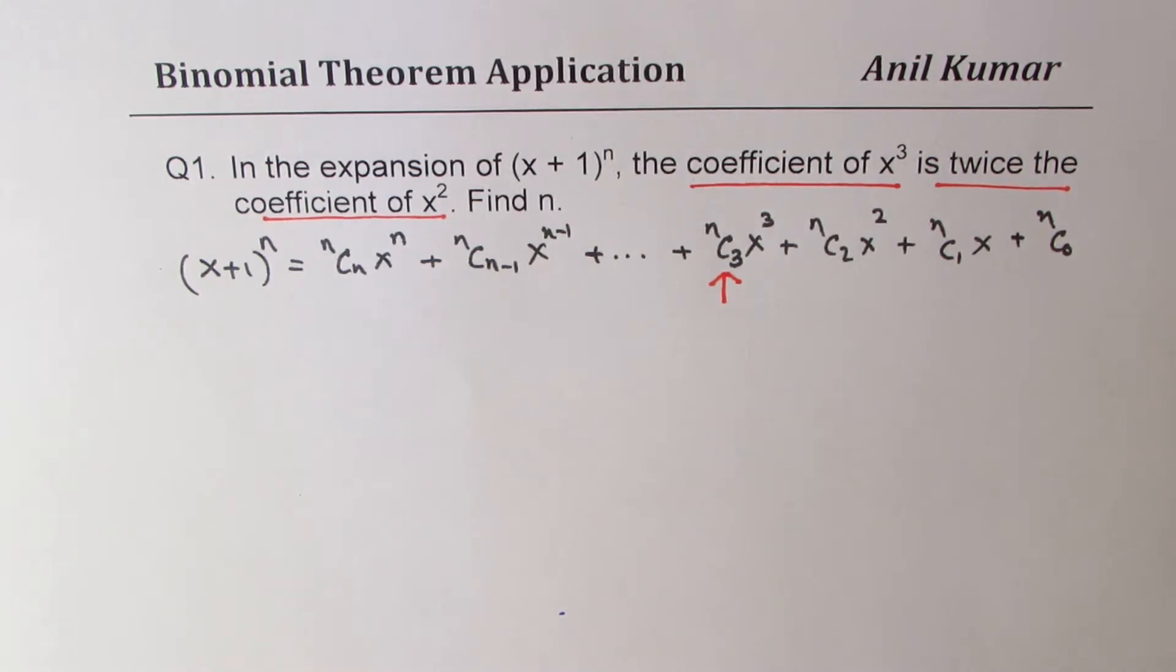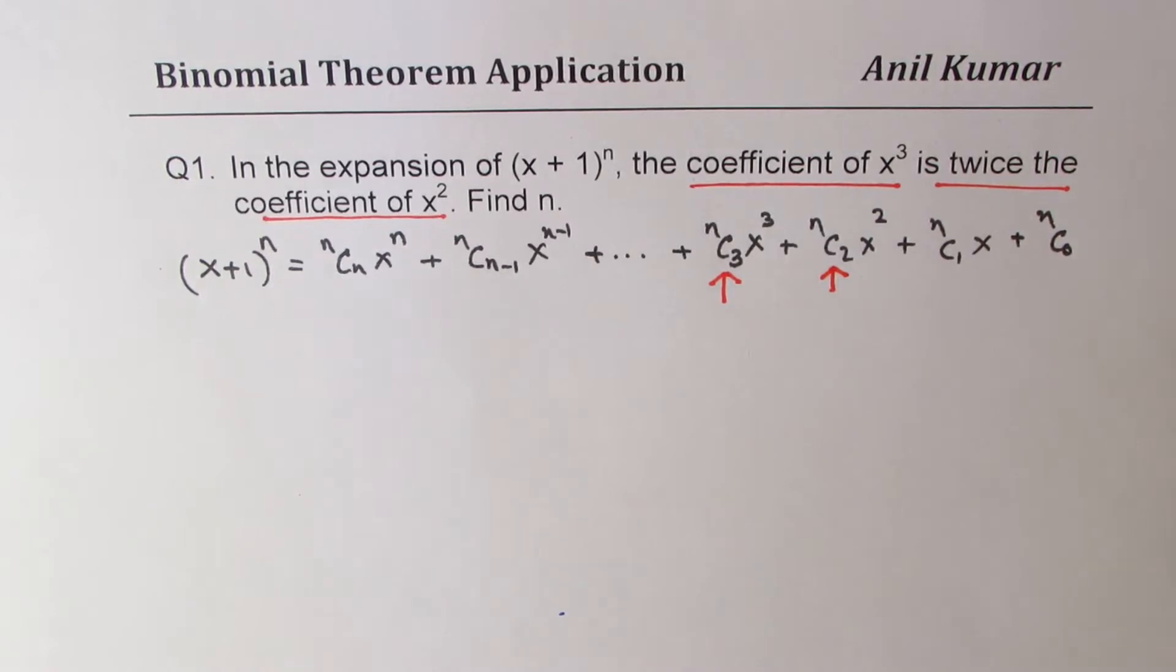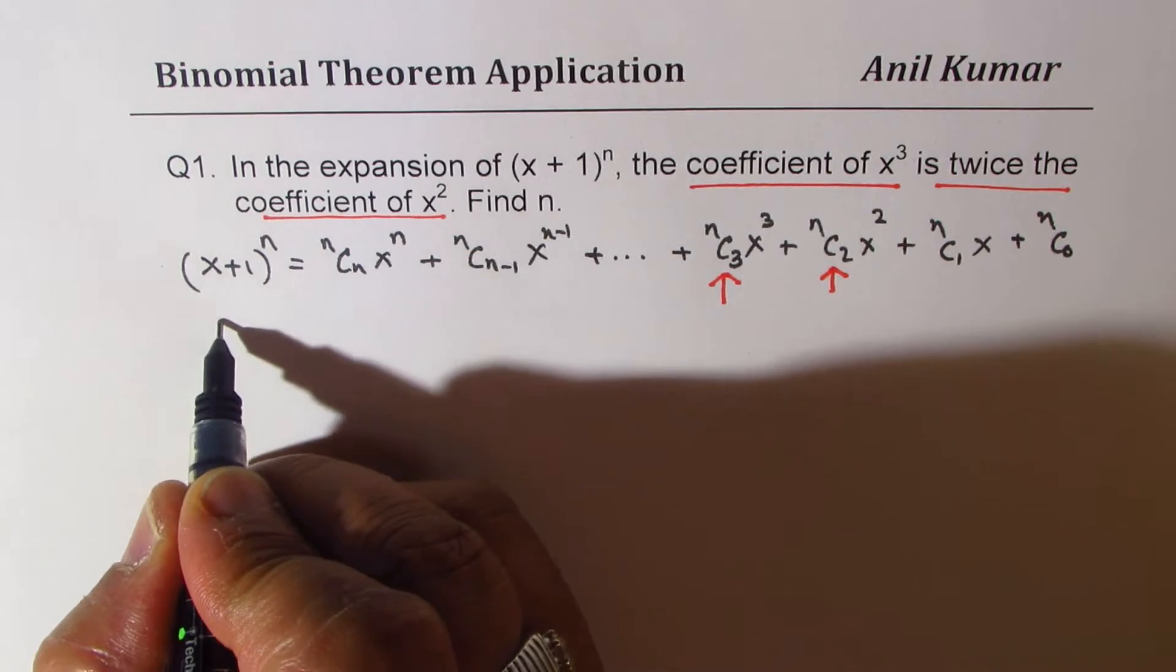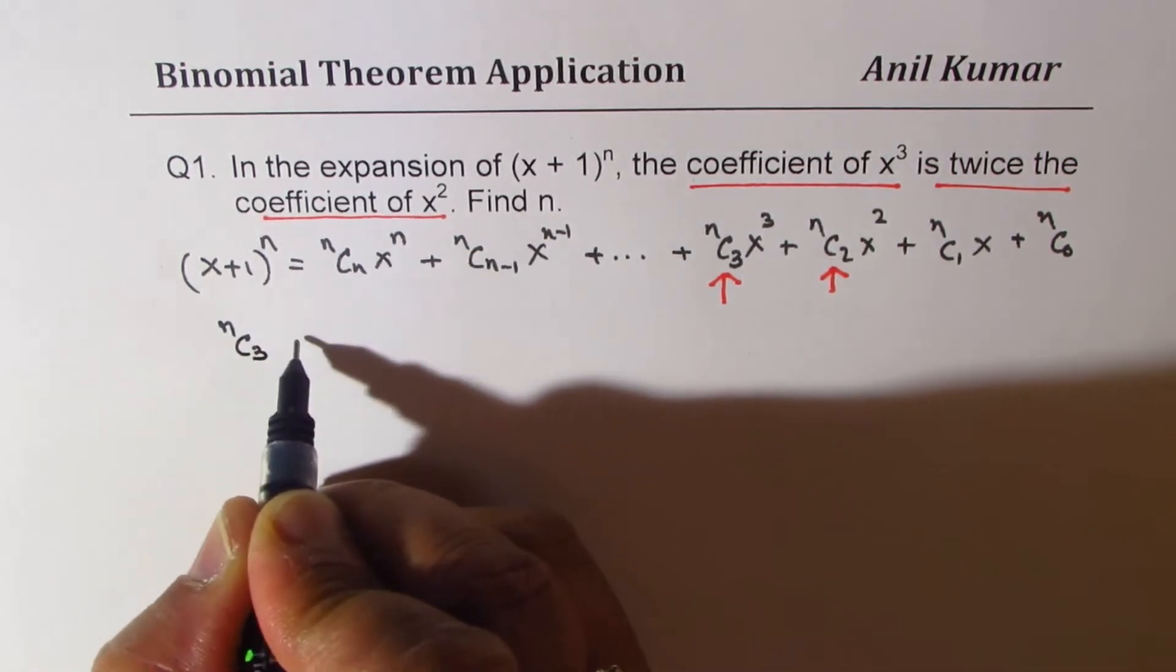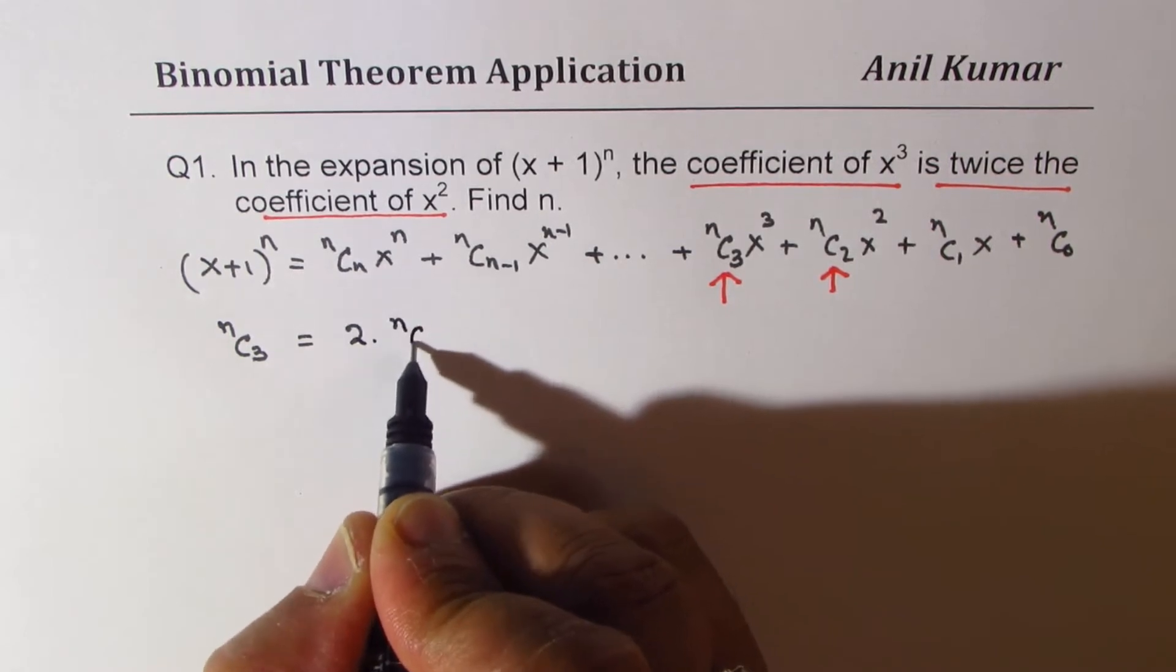So that is twice nC2. That is what we are given as a condition. So let us equate. That means we are given that nC3 is equal to twice nC2.